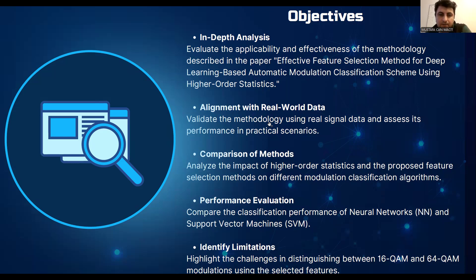We will compare how different feature selection methods and classification algorithms — like neural networks and SVMs — perform. We will also try to identify any limitations, especially when it comes to distinguishing between higher-order QAM signals.